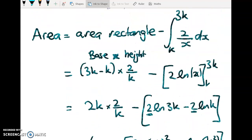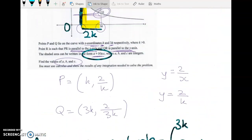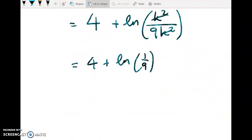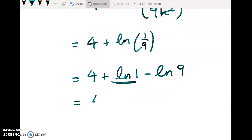But we're not done, because what we're asked to get is a, b, and c, and a, b, and c are integers. So remember that the log of 1 is 0, so it's 4 plus the log of 1 minus the log of 9. And this is just 0, so the answer is 4 minus the natural log of 9.